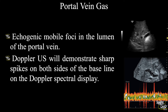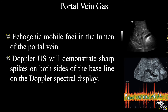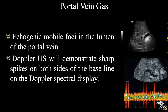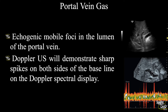Doppler ultrasound is very helpful in this case. On pulsed Doppler with a reverse rainbow color map, you'll see sharp spikes on both sides of the baseline. On regular pulsed Doppler, you'll see these spikes on the side of the direction of blood flow.